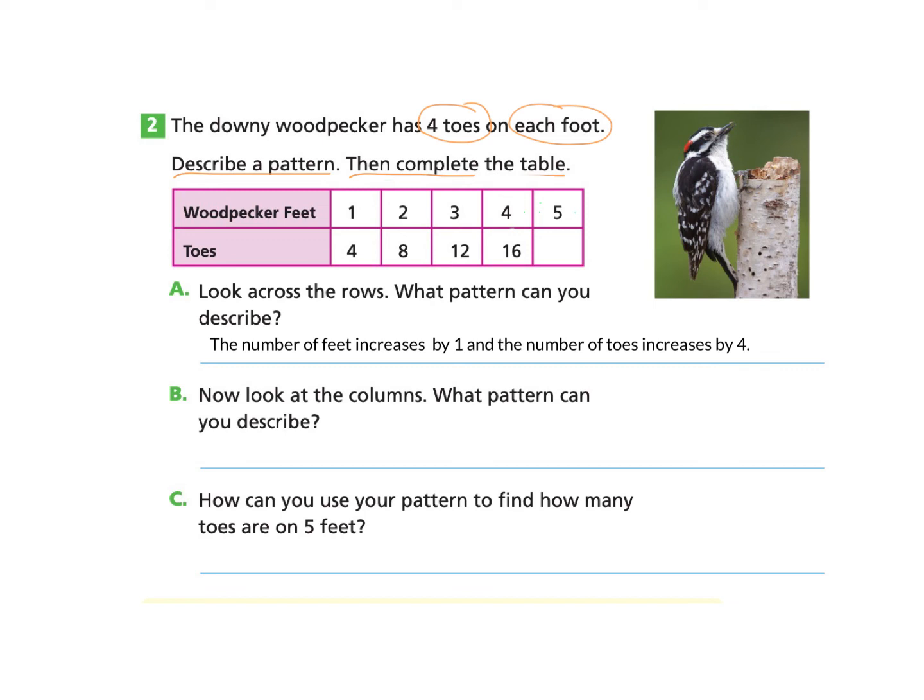Let's take a look at Part B. Now look at the columns. What pattern can you describe? So now they're asking me to look at the columns. So I'm noticing that I have one foot and that gives me four, and then I have two and that gives me eight. And so I'm starting to see a pattern here that if I multiply one times four, I would get four. And if I multiply two, the number of feet by four, if I multiply that by four, I'm going to get eight. Are you seeing the same pattern? Let's take a look at the next column. If we have three and we multiply that by four, we will get 12. And same with this one. Four times four makes 16. I can explain my thinking by writing the number of feet multiplied by four equals the number of toes.